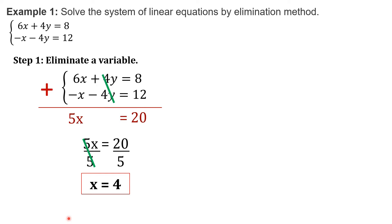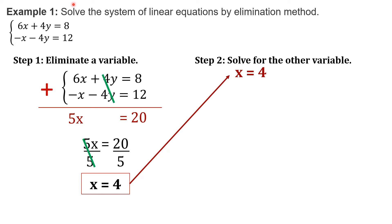For the second step, we have to solve for the other variable. Since we have solved for x, we will solve for y by using the value we obtained. We will use x equals positive 4. Choose any of these two equations — you can use the first or the second equation. Both will give you the same answer. Let us try equation number 1: 6x plus 4y equals 8.